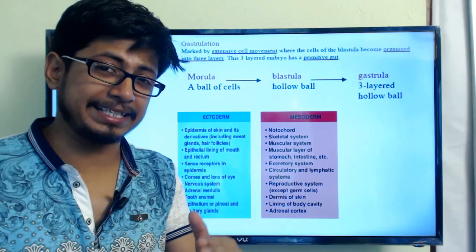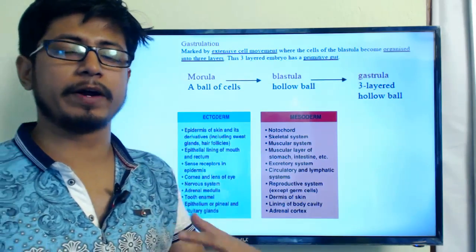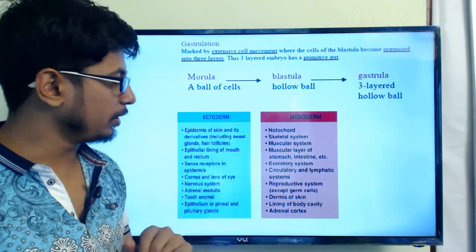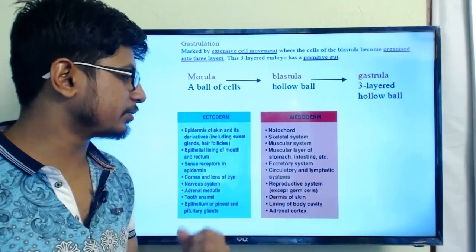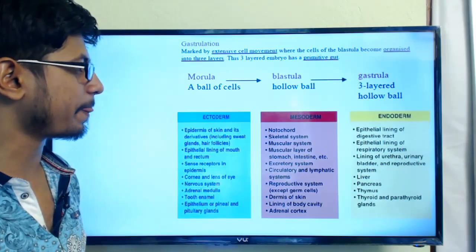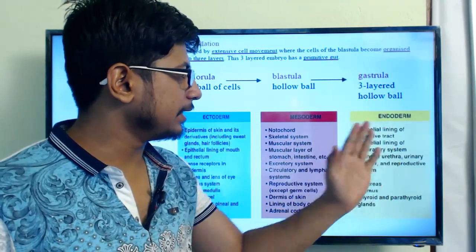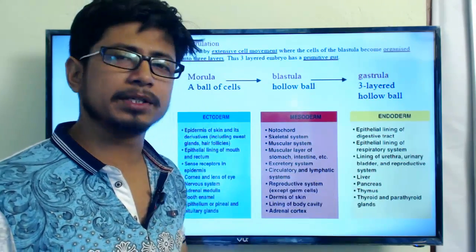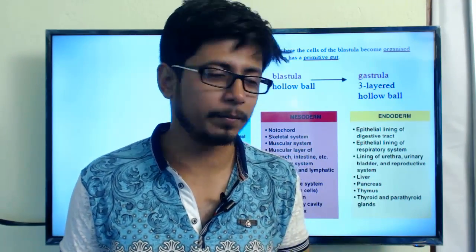Mesoderm makes the notochord — a very important structure for forming the central nervous system — as well as skeletal muscle, other muscular systems, the muscular layer of the stomach and intestine, the excretory system, and the circulatory and lymphatic system. The third and innermost layer is the endoderm, which produces the epithelial lining of the digestive tract, the epithelial lining of the respiratory tract, the liver, pancreas, and thymus.